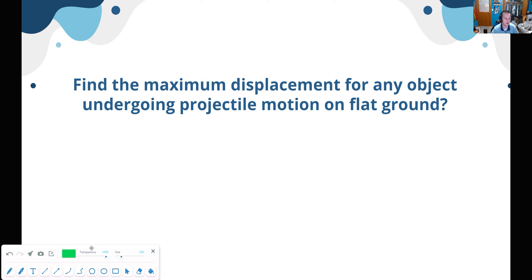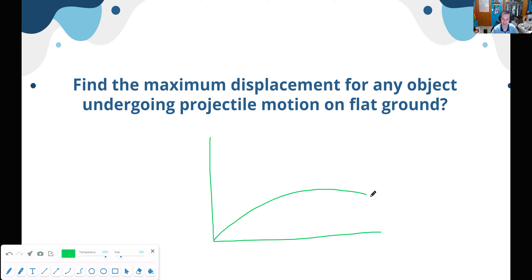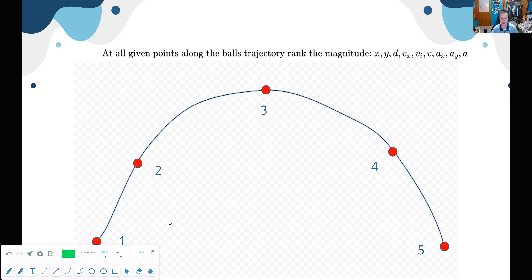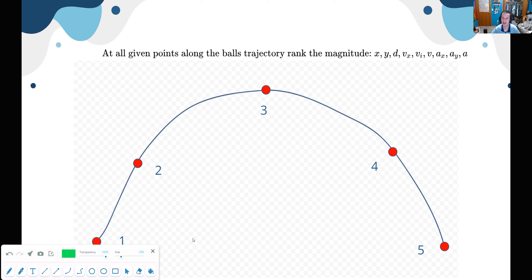Now we return to a question from the last video: find the maximum displacement for any object undergoing projectile motion on flat ground — where y-initial equals y-final. In the last episode we were working on this and found that the displacement was greatest at position 5, then 4, then 3, then 2, then 1. But I said that was only true when the range was greater than the maximum height, and I challenged you to explore further.